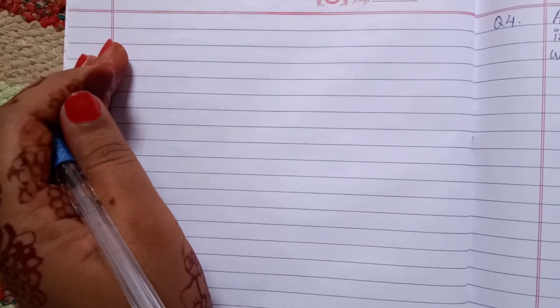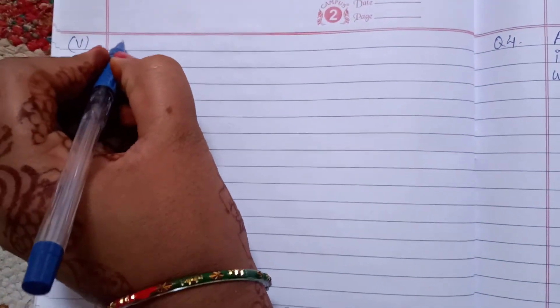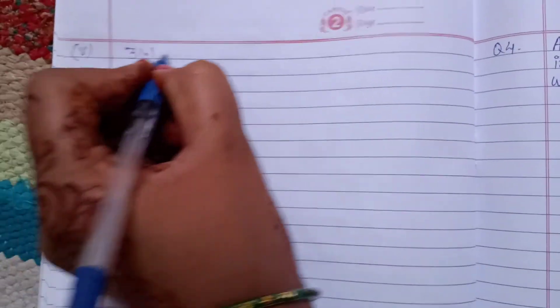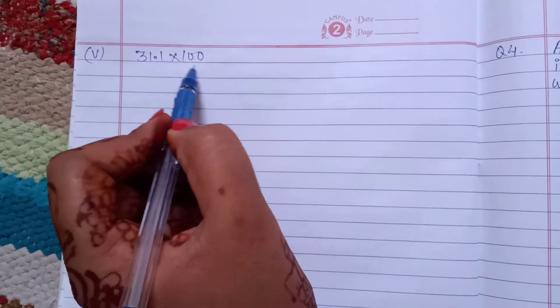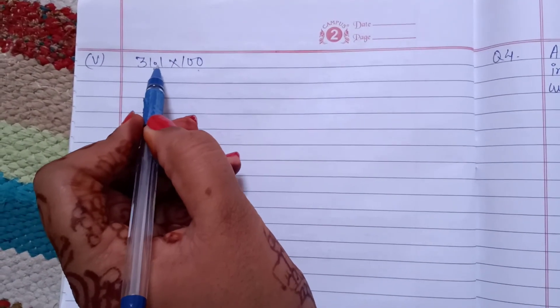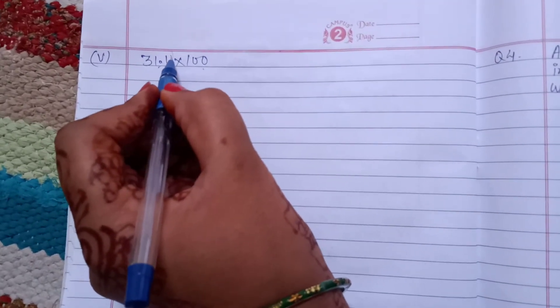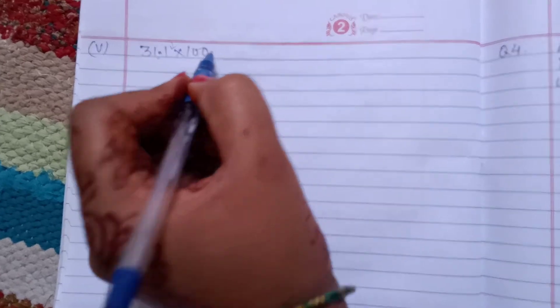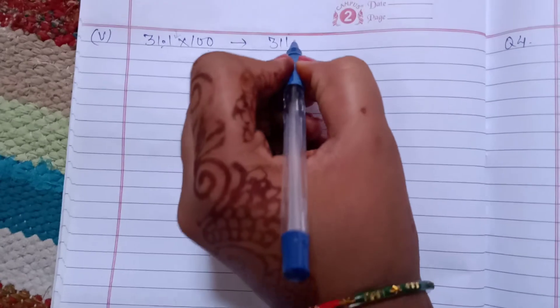Third and fourth point also same. Now move to the fifth part, that is also same. Here 31.1 into 100. Here 100, and here 1 decimal place shifted. If you shifted this side, this 1, 0, and your answer you get 3110.